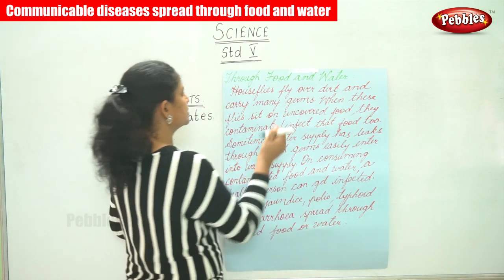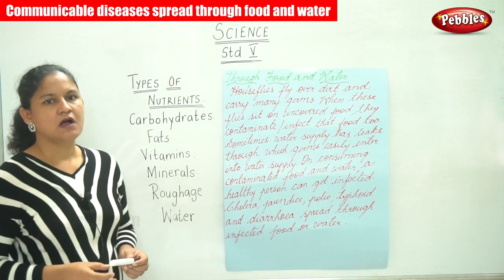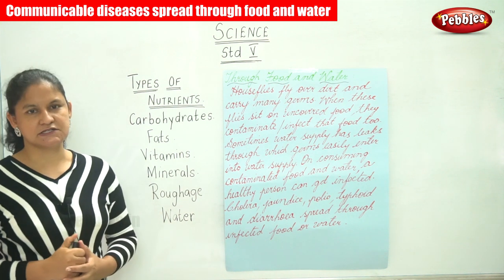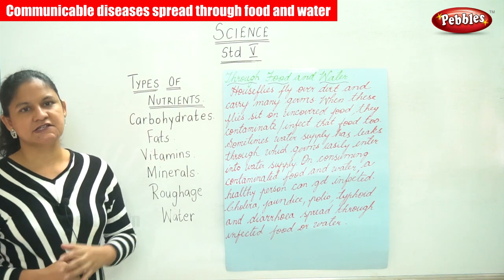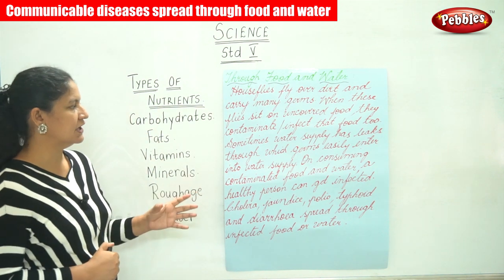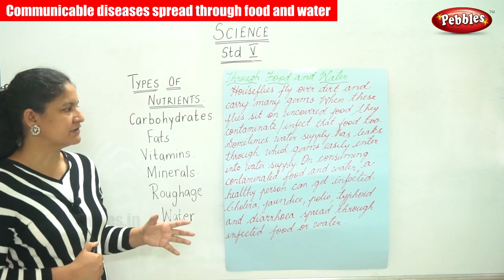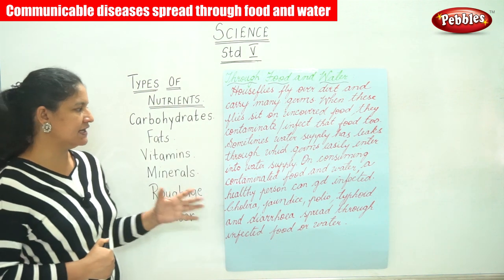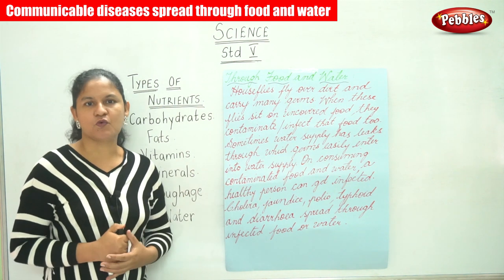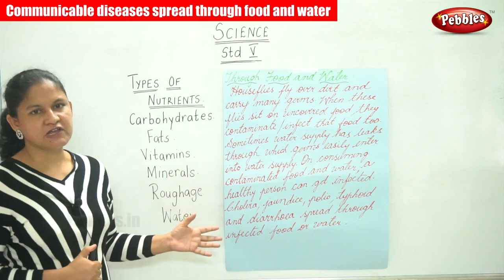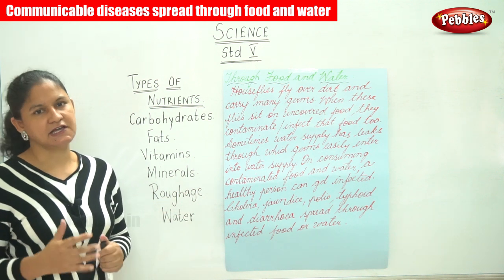The next way is through food and water. House flies fly over dirt and carry many germs, and when these flies sit on uncovered food they contaminate or infect that food. Sometimes the water supply has leaks through which germs easily enter, and on consuming contaminated food and water a healthy person can get infected.